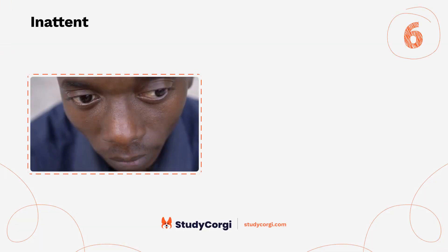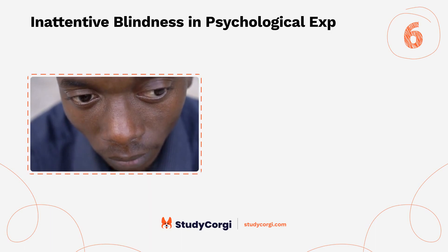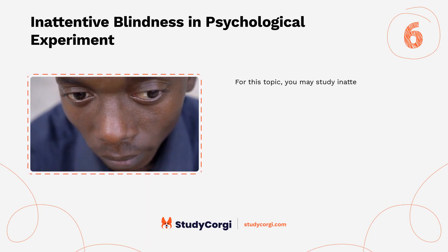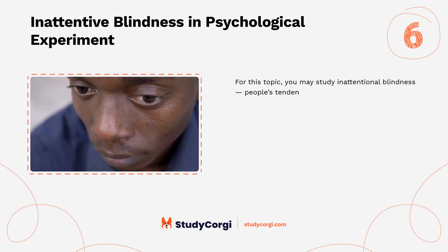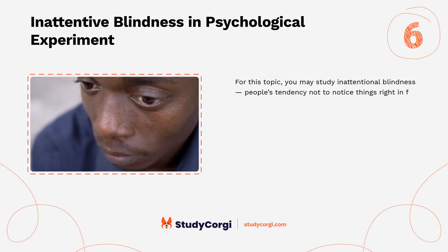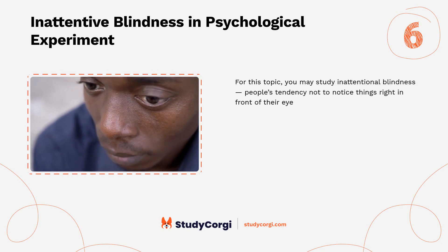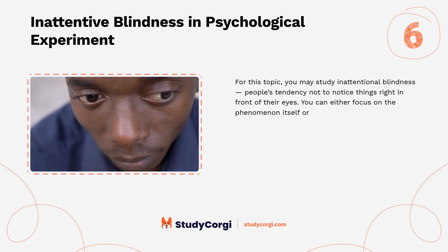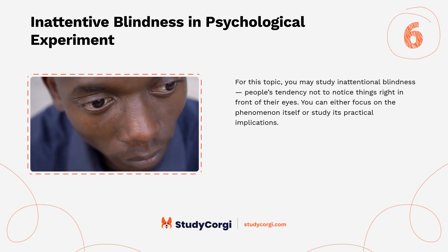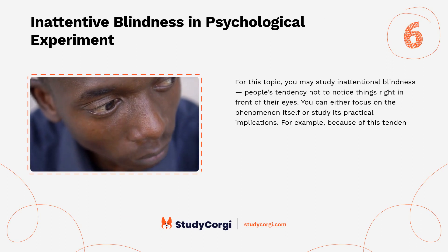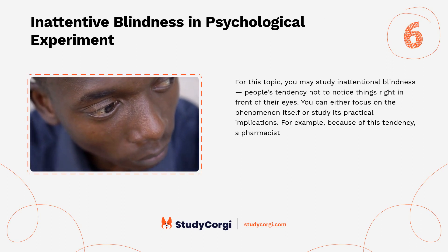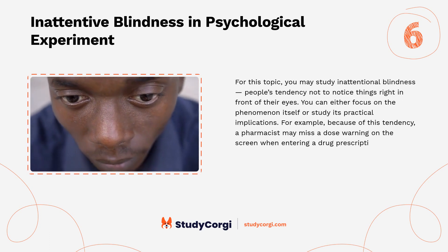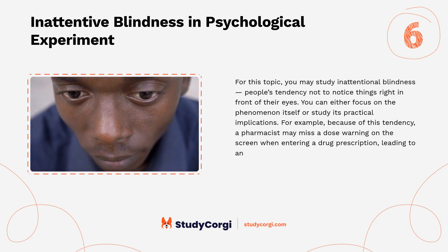Inattentional blindness and psychological experiment: for this topic, you may study inattentional blindness — people's tendency not to notice things right in front of their eyes. You can either focus on the phenomenon itself or study its practical implications. For example, because of this tendency, a pharmacist may miss a dose warning on the screen when entering a drug prescription, leading to an overdose in a patient.